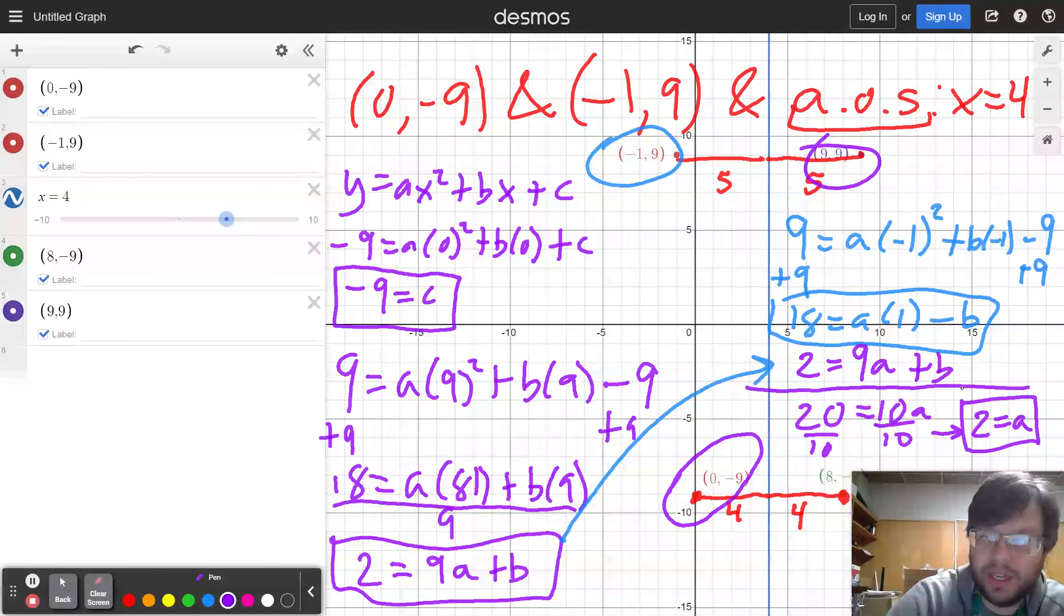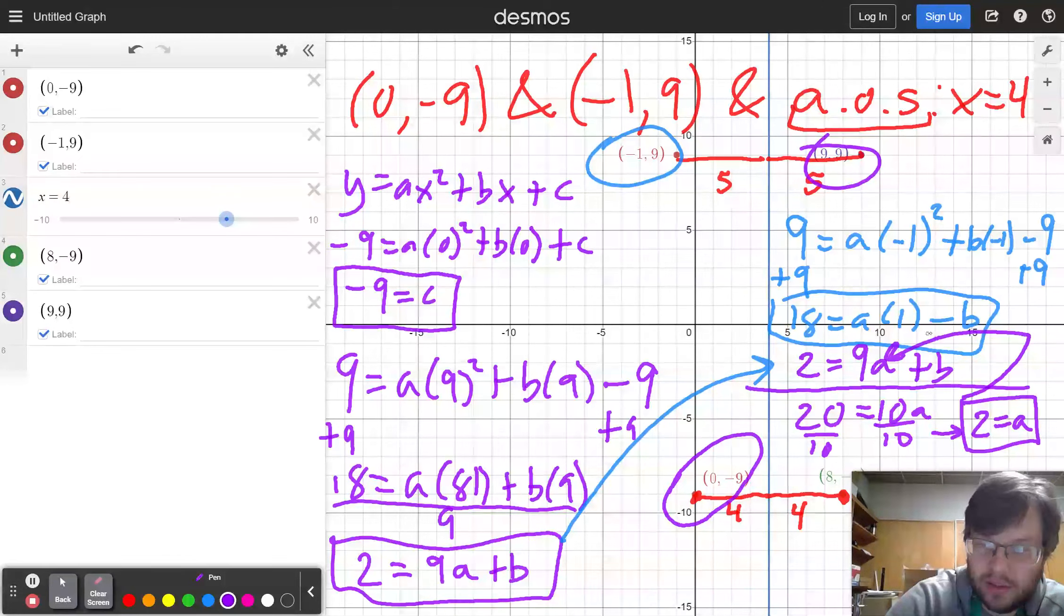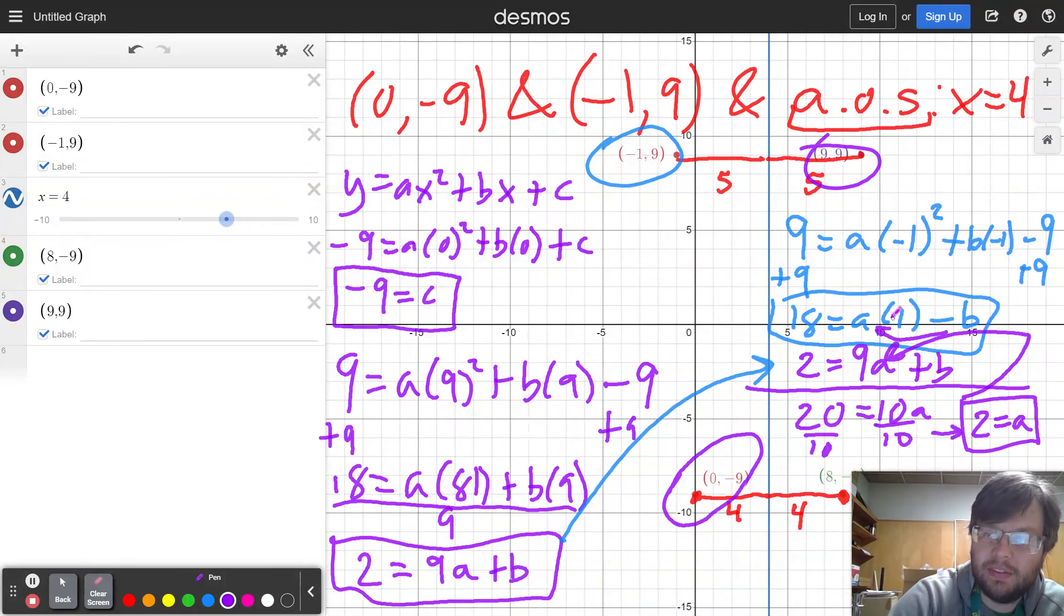If I know 2 is equal to a, I can substitute that into either this or this to get my last value. If I have 2 equals 9 times a plus b, 2 equals 18 plus b.